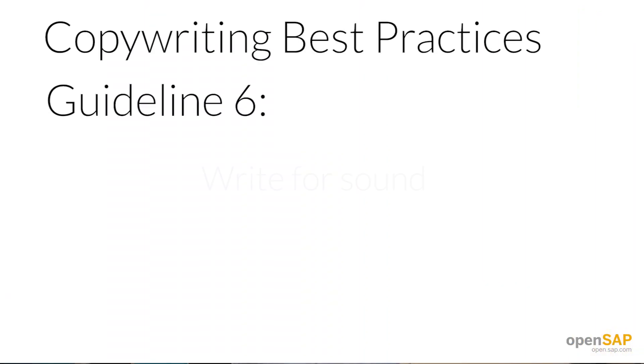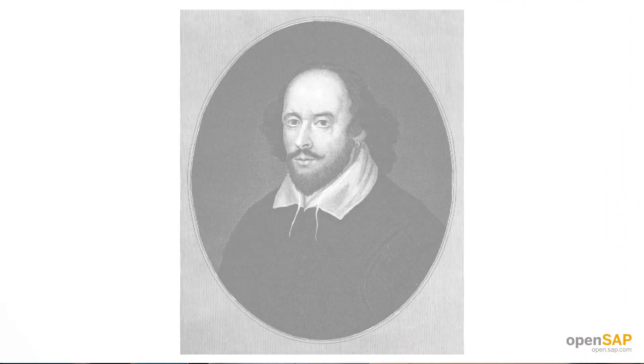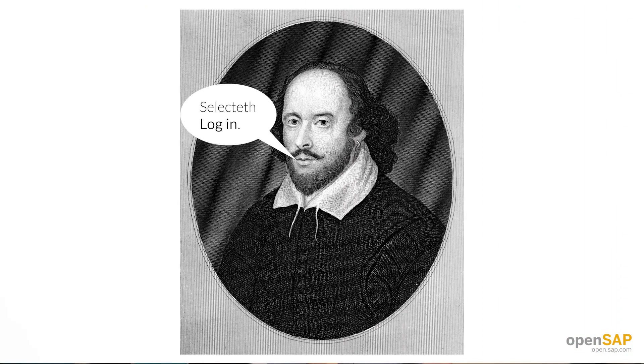Guideline six: write for sound. Growing up, many of us received very formal training in our native languages. We were repeatedly educated and drilled on things like proper grammar and punctuation. Because of that, many of us have a sort of inherent, even subconscious, propensity to write in an extremely formal fashion. Our spoken language and our writing style very often don't match. In software, we want to write for sound. After you write, read your copy out loud. If it sounds like something your high school English teacher or Shakespeare would say, it might not be the best option.